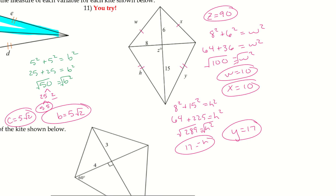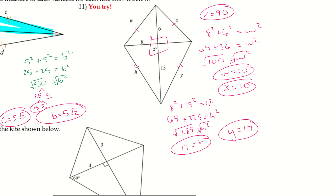For number eleven: z equals 90 degrees because all angles at the intersection are 90 degrees. I found the smaller triangle first — those consecutive sides are congruent. Once I found h, I knew y, since h and y are congruent consecutive sides.